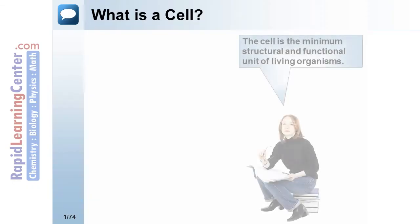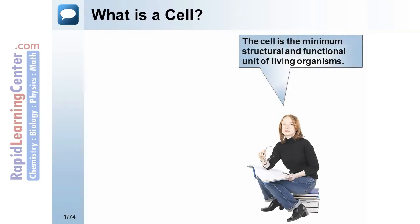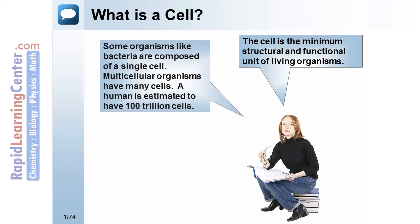What is a cell? The cell is the minimum structural and functional unit of living organisms. Some organisms, like bacteria, are composed of a single cell. Multicellular organisms have many cells. A human is estimated to have a hundred trillion cells.